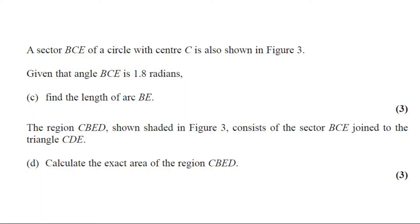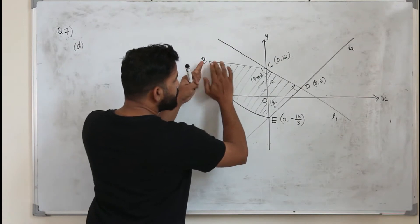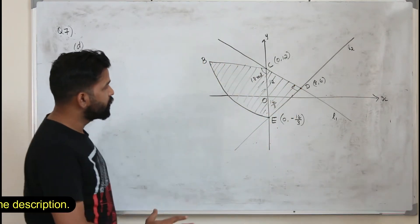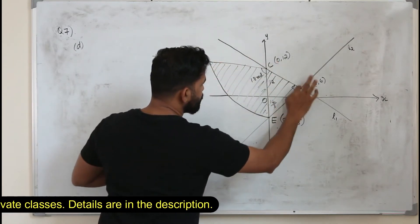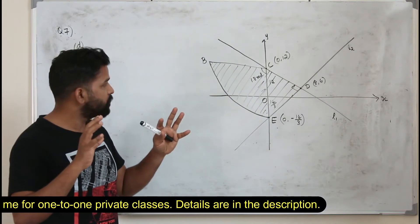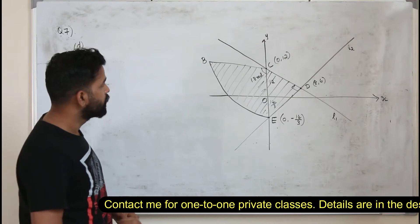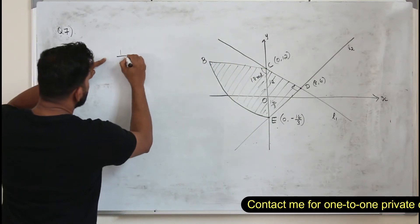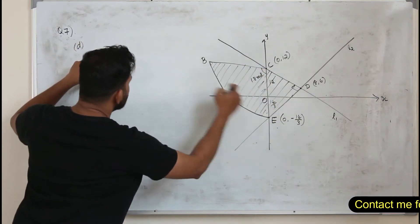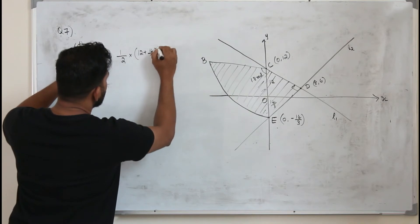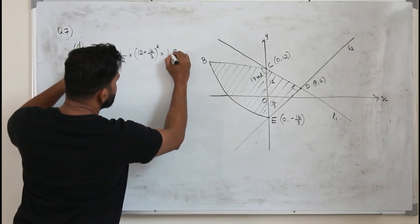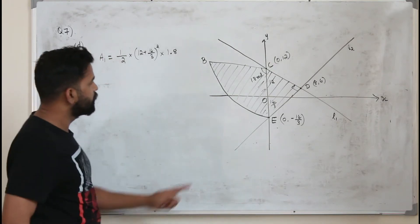The region CBED, shown shaded in the figure, consists of the sector BCE joined to the triangle CDE. Part D: calculate the exact area of the region CBED. This question carries three marks. The shaded region consists of a sector and a triangle. Find the area of each separately and add them. The sector area is half R squared times theta, where R is 12 plus 14 over 3 and theta is 1.8.